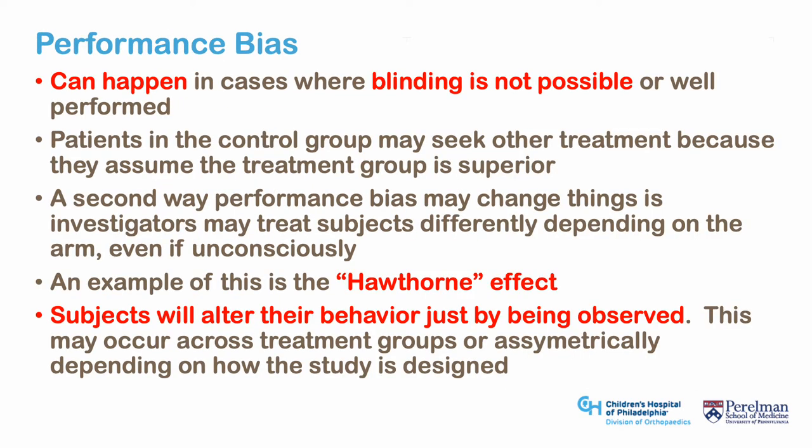Performance bias can happen in cases where blinding is not possible or not well-performed, making surgical trials extremely vulnerable. First, if a patient learns they are in a control group, they may seek other treatment assuming the trial group is superior, resulting in random statistical noise or, if the alternative treatment is effective, biasing results towards the null. A second way is if investigators treat patients differently in different arms, even unconsciously — responding more quickly or treating more aggressively.